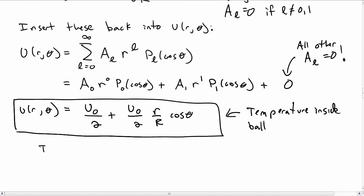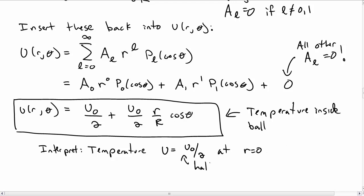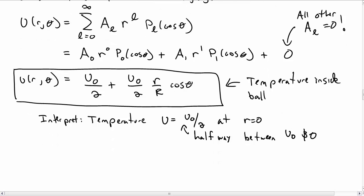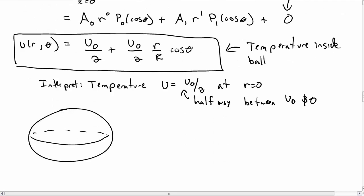Let's take a moment to interpret what this looks like. Note that the temperature at the center of the sphere, at r = 0, is just u₀/2 — it's exactly halfway between u₀ at the top and 0 at the bottom. If we draw the ball with temperature u₀ at the top and 0 at the bottom, then everywhere along the equator at θ = π/2 also has temperature u₀/2. The temperature essentially transitions as smoothly as possible from u₀ to 0. This is how you solve a problem using separation of variables in spherical coordinates and impose the boundary conditions.